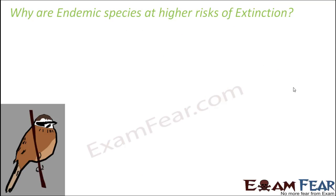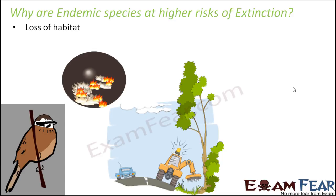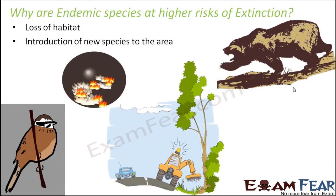Why are endemic species at higher risk of extinction? First, loss of habitat — this might happen due to forest fires or human exploitation. Since these species are dependent only on one specific habitat, if that habitat is lost, you do not have those species anywhere else. Second, introduction of new species into the area — new species might compete with or attack the existing endemic species. Since endemic species are located only in a specific geographic area, anything that goes wrong there means the endemic species are gone.